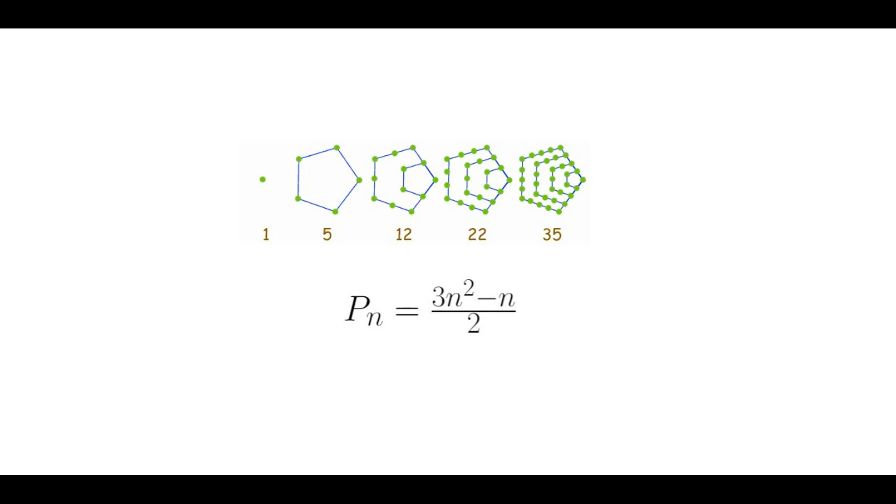As with the triangular numbers of my previous video, we have a formula for computing the nth pentagonal number. Pn is equal to 3n squared minus n over 2. You can check yourself on these examples that this is true.